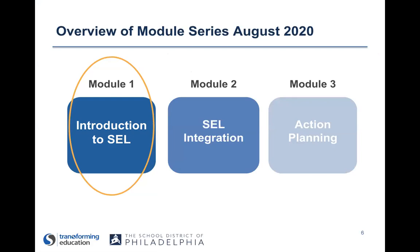The purpose of these three modules is to provide educators with foundational knowledge around social emotional learning, and in particular social awareness and relationship building. These two competencies were chosen in part because we have limited time and can't cover the entire spectrum of SEL, but also because we think these will be really critical skills to focus on with fall reopening and throughout the year, particularly for those in the distance learning virtual context.